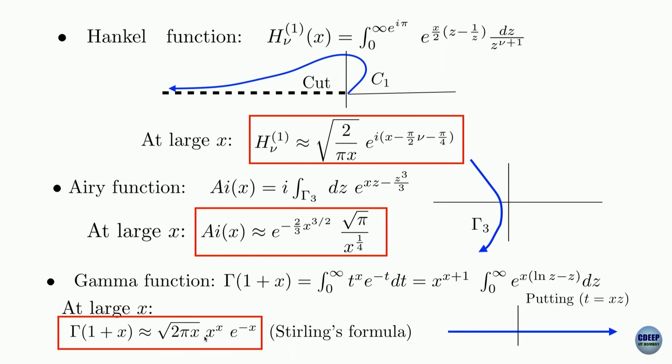If you have seen this formula, well and good. If you have not seen it, no problem. But the question is: where does Stirling formula arise from? It turns out that this gamma function integral can be written—if you just scale this t as xz—then you can rewrite it in this way, where again you are left with an integral which is x times some g of z.